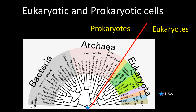There is no fossil proof for LUCA, but using commonalities in genes we can see that somewhere between 3.5 billion and 4 billion years ago, LUCA gave rise to other cell types.